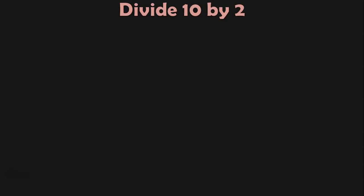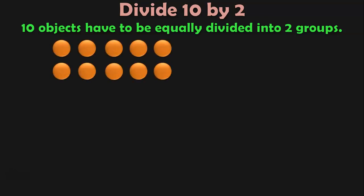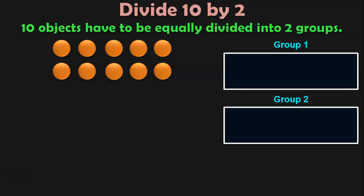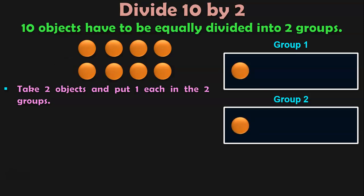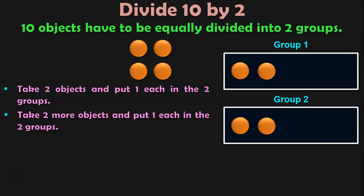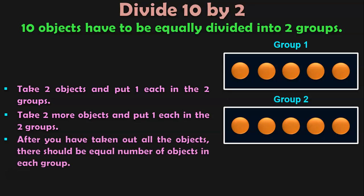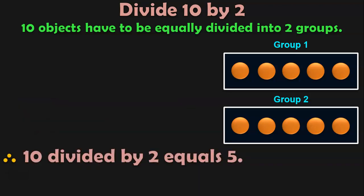The next sum is divide 10 by 2. 10 objects have to be equally divided into 2 groups. Here we have 10 marbles and 2 groups. First step is to take 2 objects and put 1 each in the 2 groups. Repeat the same step: take 2 more objects and put 1 each in the 2 groups. Keep repeating the process till all the objects are taken out, putting 1 each in the 2 groups each time. We have 5 objects in each group, which means 10 divided by 2 equals 5.